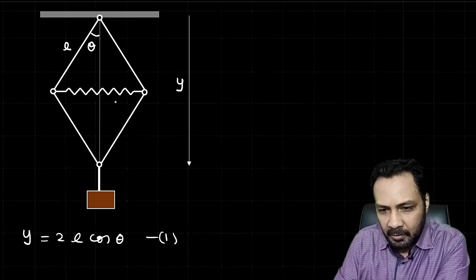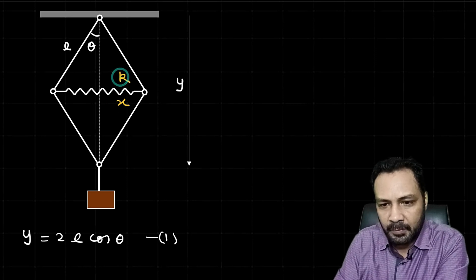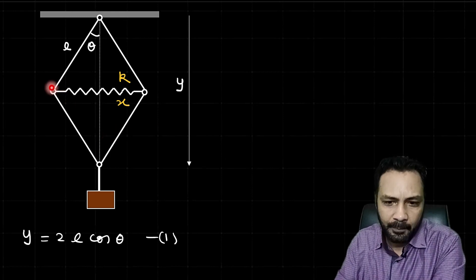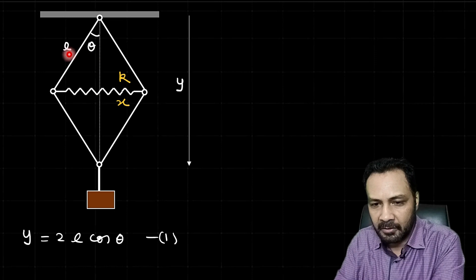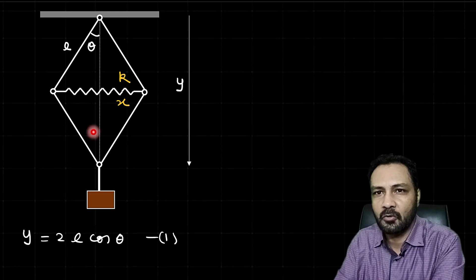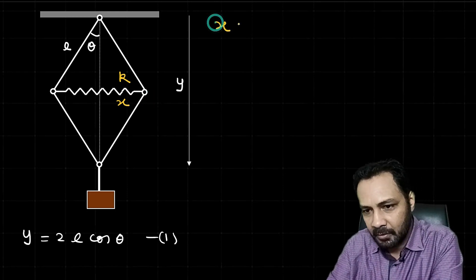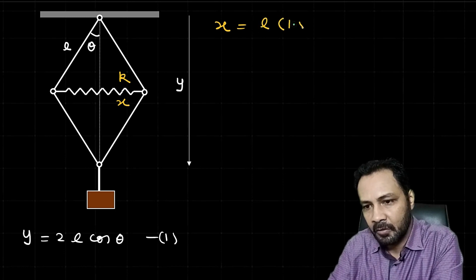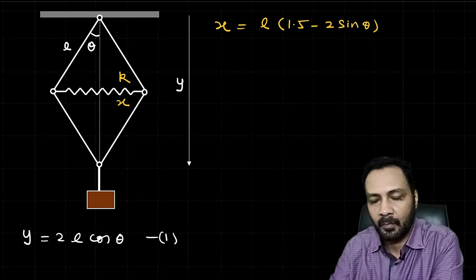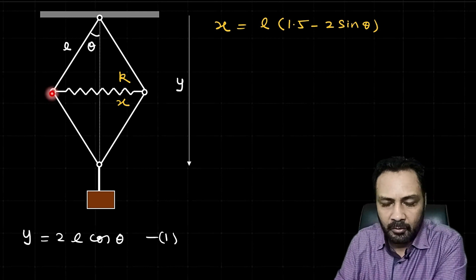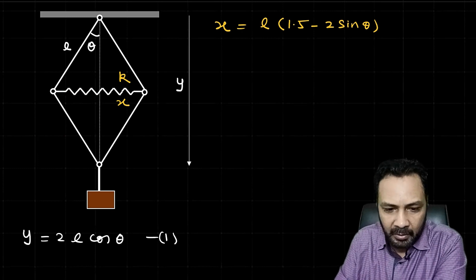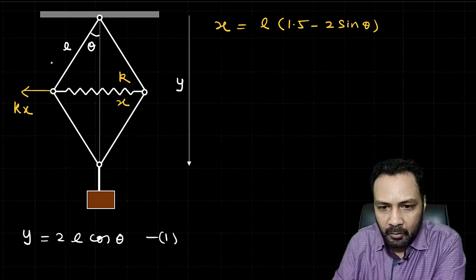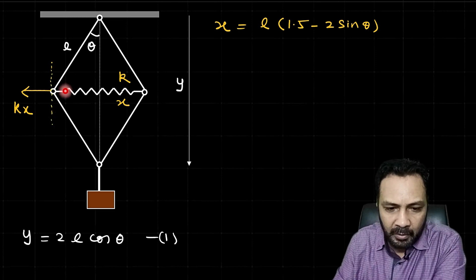At a general position, let the spring compression be X and spring constant be K. Compression equals natural length minus deformed length. The natural length is 1.5L. The horizontal distance from center to B or D is L sinθ, so the deformed spring length is 2L sinθ. Therefore, compression X = 1.5L − 2L sinθ, which equals L(1.5 − 2sinθ).